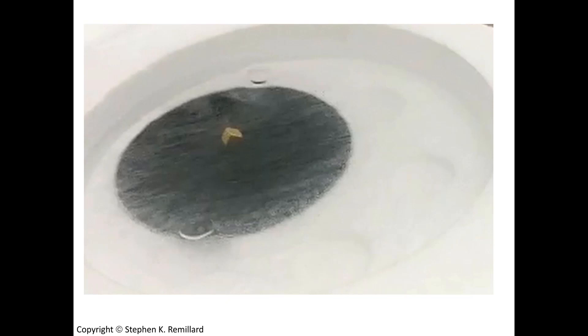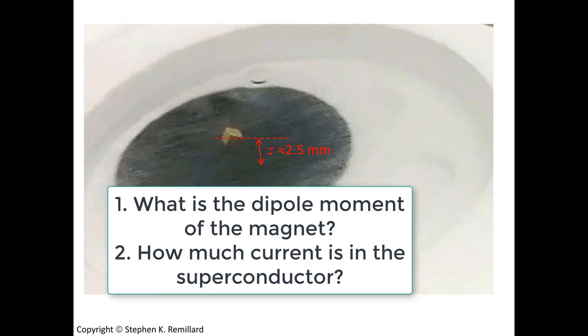We just watched a magnet float above a superconductor at a height of about two and a half millimeters. And that leaves me with a couple of questions. The first question is, what is the magnetic dipole moment of that magnet? And a follow-up question to that is, what current is induced in the superconductor in order to levitate the magnet?